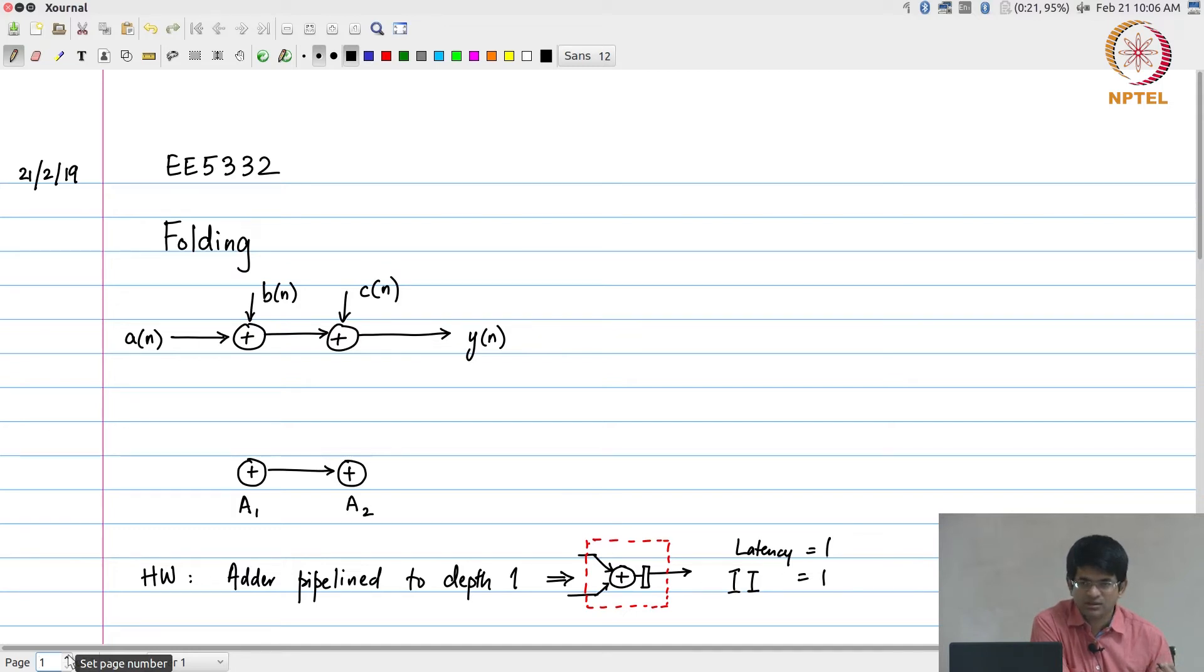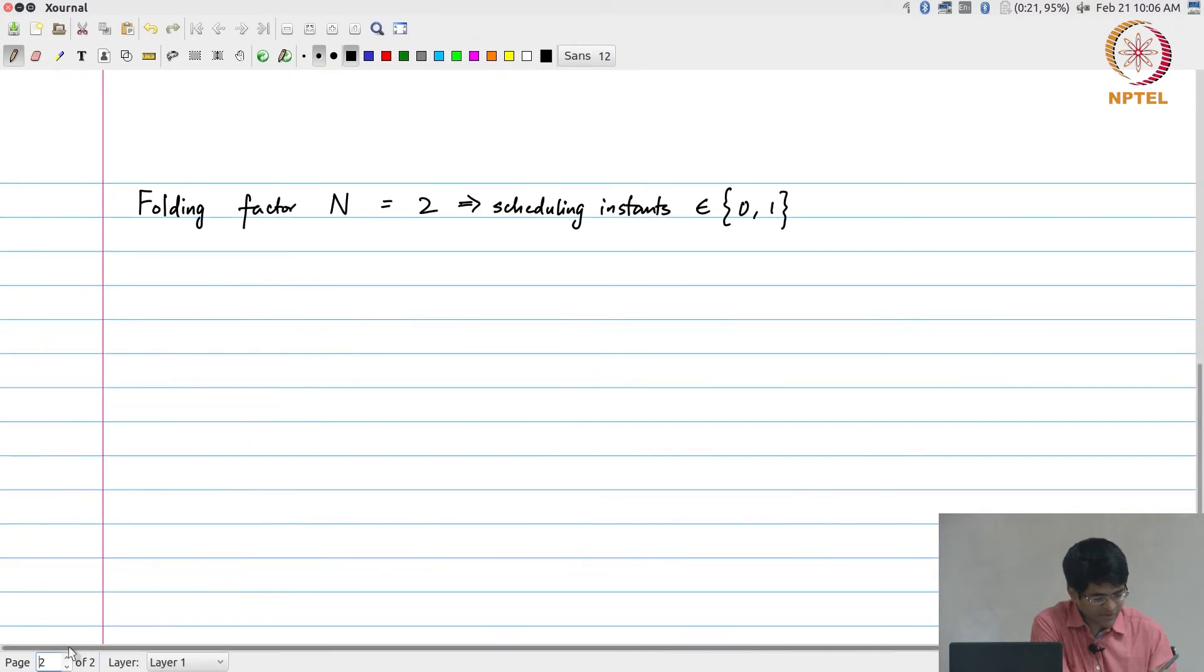Any of the operations A1 and A2 need to get scheduled in either time 0 or in time 1. Also, from just observing this data flow graph, we can see that A2 has to happen after A1, and in fact one cycle after A1. From that, we can see the only valid choices are t of A1 equals 0 and t of A2 equals 1, where t of a node is the time instant at which it is scheduled. These are the only choices which allow us to satisfy the constraints under this particular implementation.